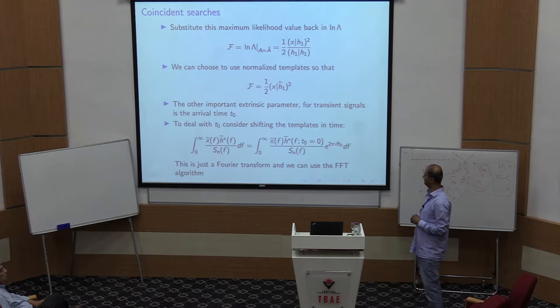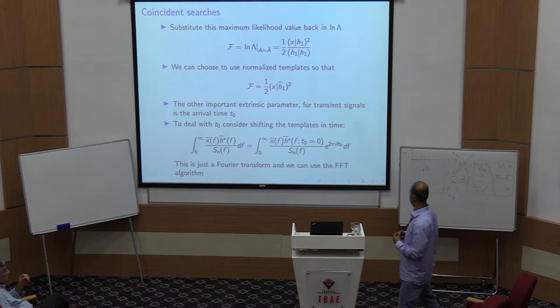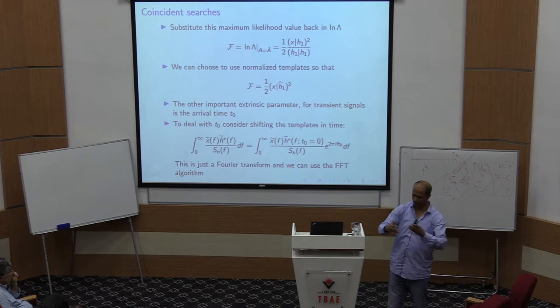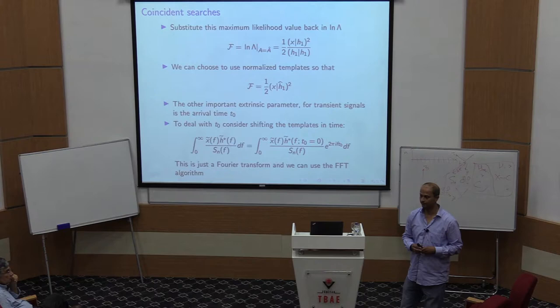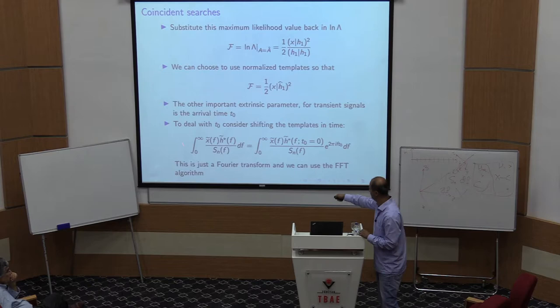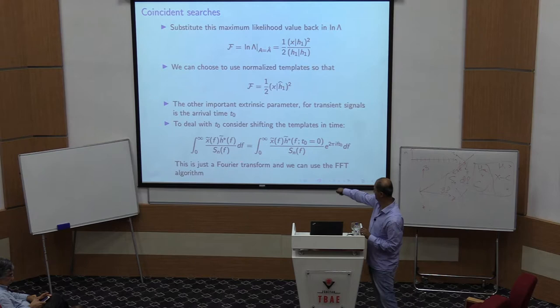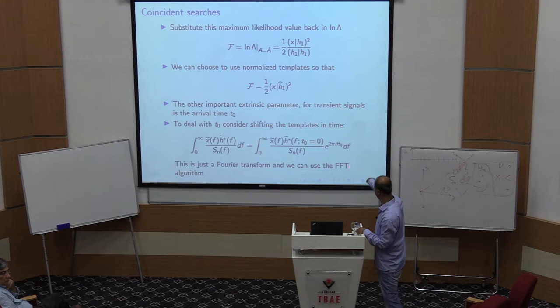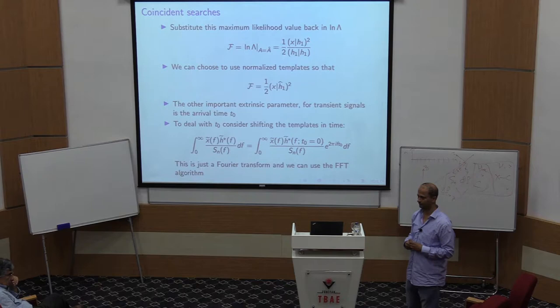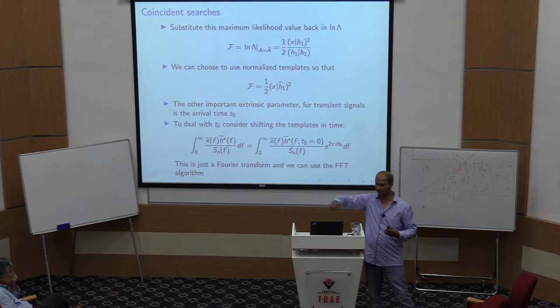An important simplification is that we want to consider binary black hole signals arriving at any time. By shifting a signal in the frequency domain in time, we just get a phase multiplier. So computing inner products for different arrival times t₀ is equivalent to computing one inner product at t₀=0 and then doing an inverse Fourier transform — allowing the search over arrival time to be done entirely through an FFT.